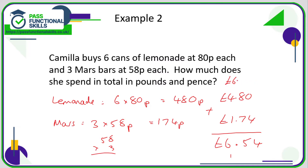It's quite possible that in the answers they might write a certain number of pounds and a certain number of pence like this, and you'd just write six pounds 54.